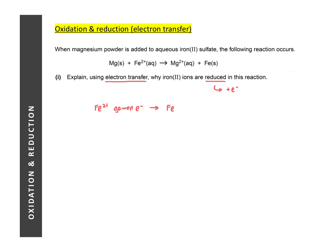Therefore, iron(II) ions are reduced. The opposite would apply if asked why magnesium is oxidized — you would say that magnesium atoms have lost electrons to form magnesium ions.